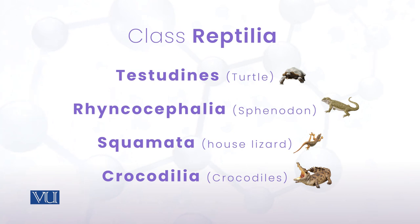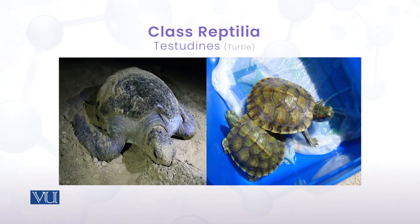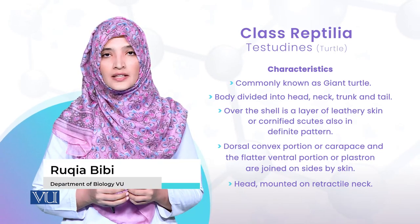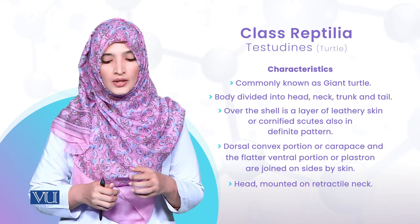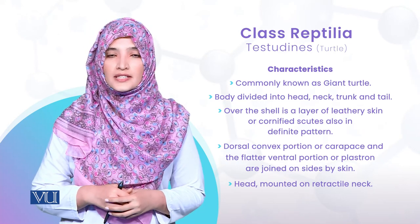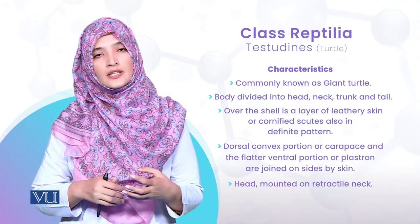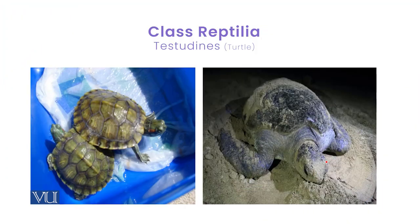اب ہم Testudines کی description دیکھتے ہیں۔ Testudines ایک order ہے اور اس کا representative member turtle ہے۔ Tortoise بھی Testudines میں included ہے۔ Body چار parts میں divided ہے: head، neck، trunk، اور tail۔